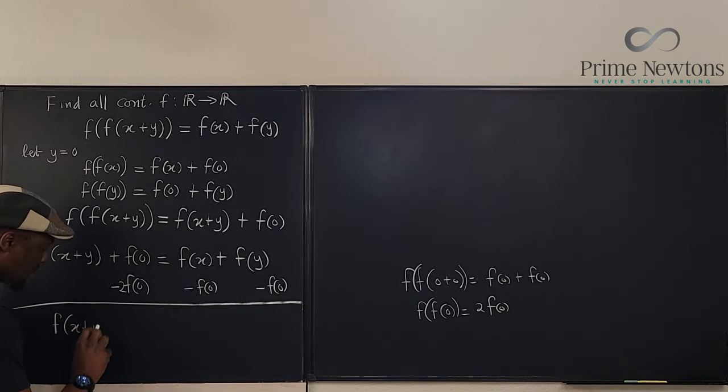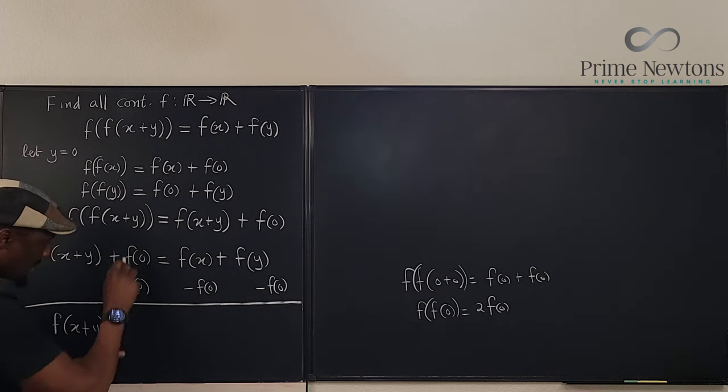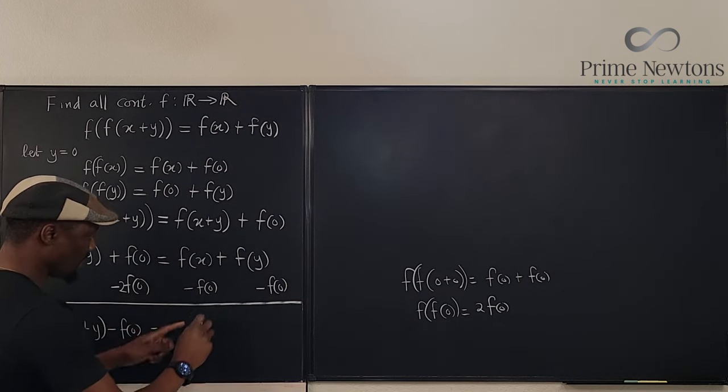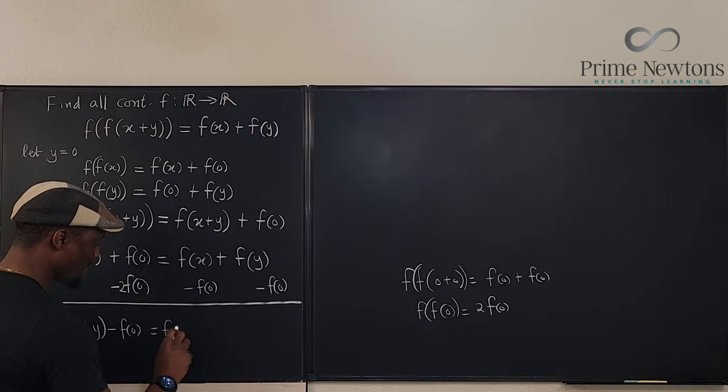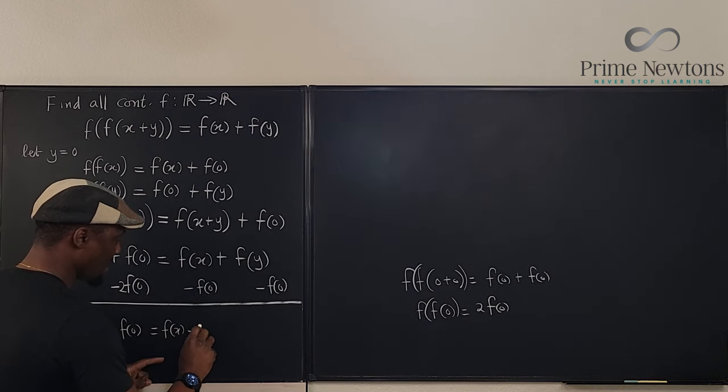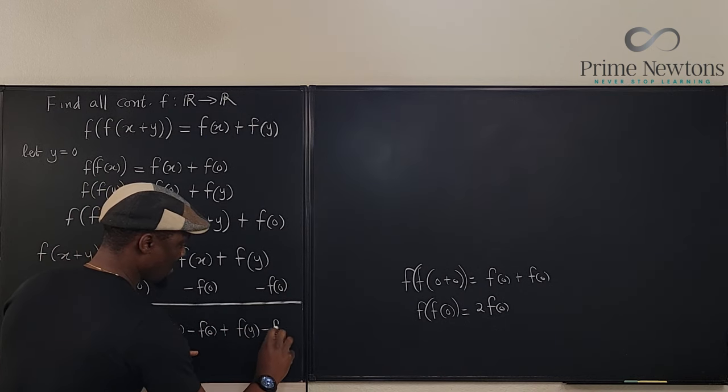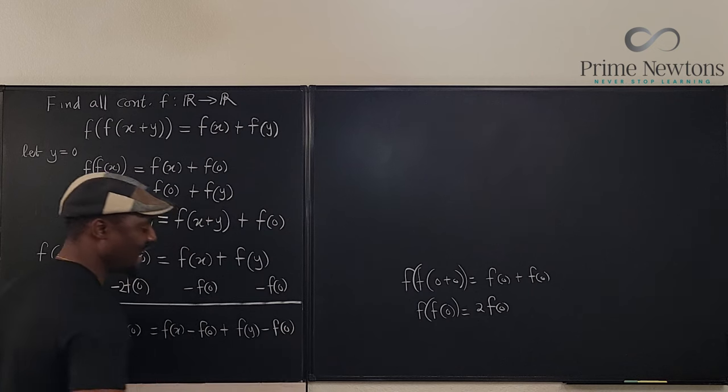So I'm going to end up with this function. f of x plus y minus, this is going to be f of zero, f of zero, will be equal to, this is going to be, f of x minus f of zero plus f of y minus f of zero. Nice.